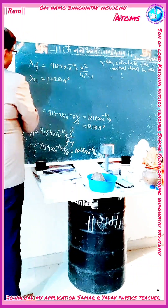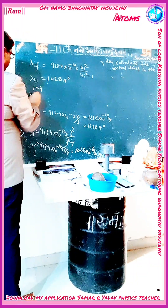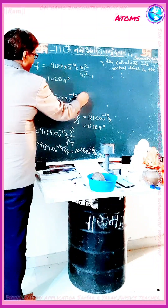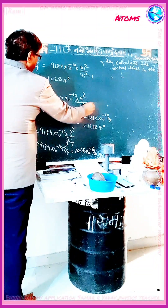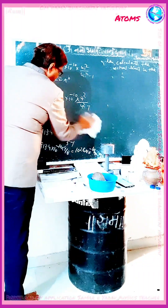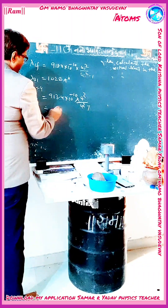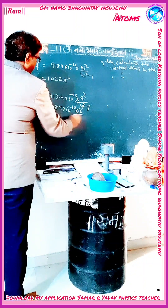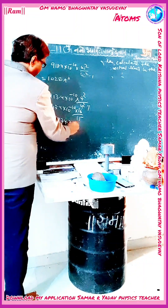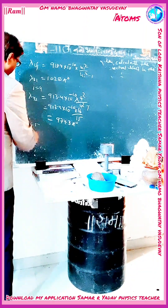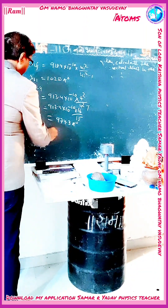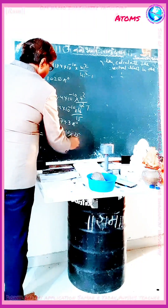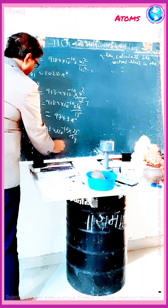For n_i equal to 4, λ₄₁ is equal to 913.4 × 10⁻¹⁰ into 4² upon (4² minus 1), that is 913.4 × 10⁻¹⁰ into 16 upon 15, giving 974.3 Angstroms. For λ₅₁, that is 913.4 × 10⁻¹⁰ into 25 divided by 24, giving 951.45 Angstroms.